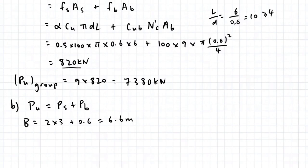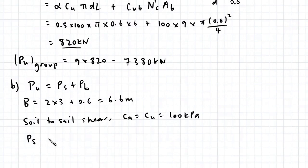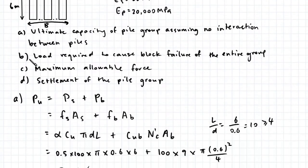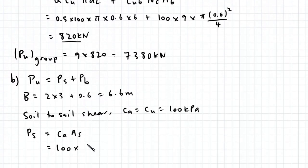Because of the soil between each pile, the block undergoes soil to soil shear. Therefore the adhesion equals the cohesion, which is 100 kPa. The total shaft resistance Ps equals Ca multiplied by As. That's 100 multiplied by, since we're considering a block, 6 times 6.6 times 4, giving us 15,840 kN.